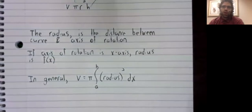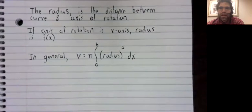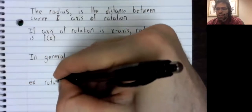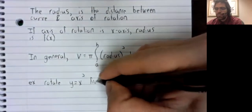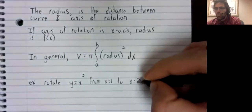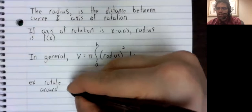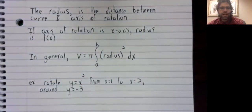And as is so often the case with mathematics, I think an example will clarify things nicely. Let's use the example from the set of notes. Let's rotate y equals x squared from x equals 1 to x equals 2, not around the x-axis, but around y equals negative 3.